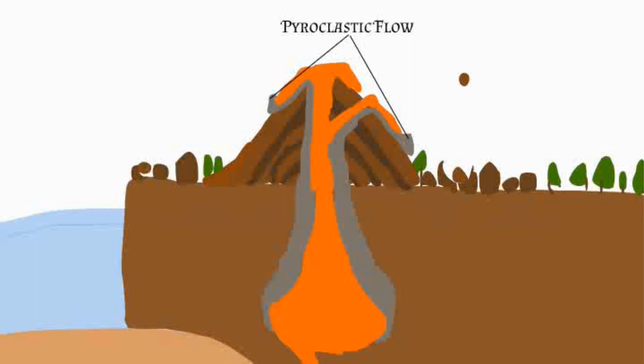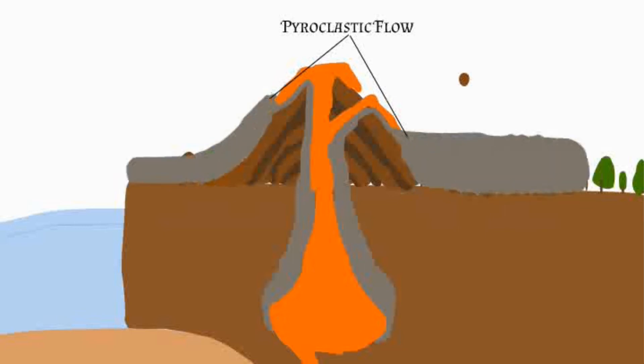Another danger is pyroclastic flow. This is probably one of the most dangerous things as it can reach temperatures of 1000 degrees centigrade and travel at 430 mph. It truly is devastating.